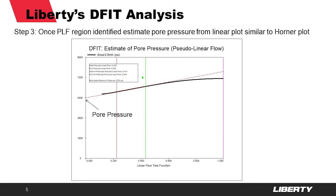We use this pseudo-linear flow time window in step number three to estimate the reservoir pressure or pore pressure. We do that by drawing a regression line through that pseudo-linear flow window with the green and red vertical lines, and we extrapolate back to the y-axis the reservoir pressure — in this case about 5,400 psi or so. This is similar to the techniques in pressure transient analysis such as the Horner plot.